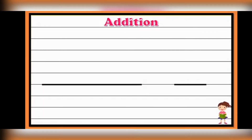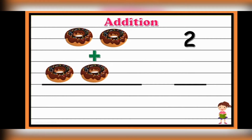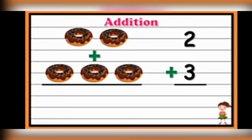Now let's check out our next example and start counting the objects. So here we have 1, 2 — there are 2 donuts. Plus 1, 2, and 3 — so that is plus 3 donuts. Now we have to find the total number of donuts.